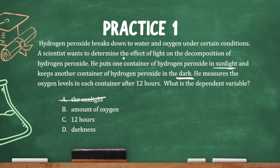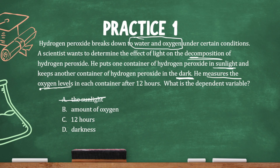What's the effect? He's thinking that maybe light affects the decomposition of hydrogen peroxide. Since hydrogen peroxide breaks down to water and oxygen, if light does break down the hydrogen peroxide, there would be more oxygen in the container exposed to sunlight. He's measuring the oxygen levels, and remember you can identify the dependent variable by what is measured. So the answer is B.